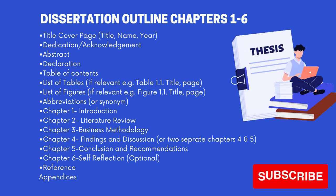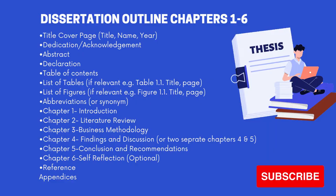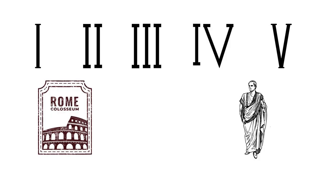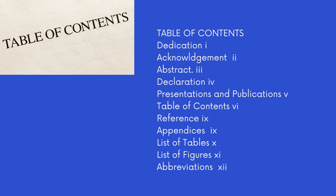The first section uses Roman numerals. What goes in the Roman numerals section? Your table of contents, dedication, acknowledgement, abstract, and declaration. If you have any presentations or publications, you can include those too. Also your references, appendices, list of tables, list of figures, and any abbreviations.